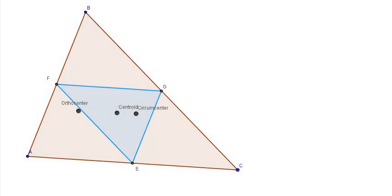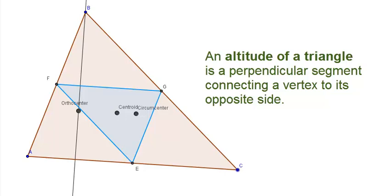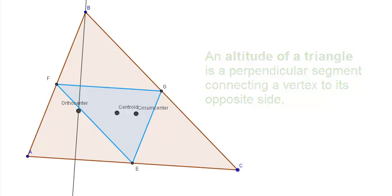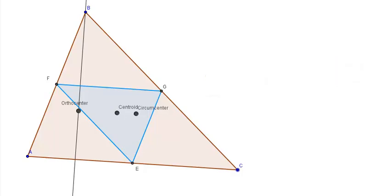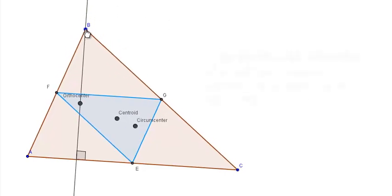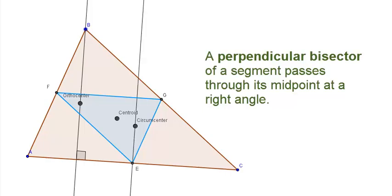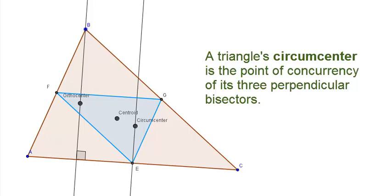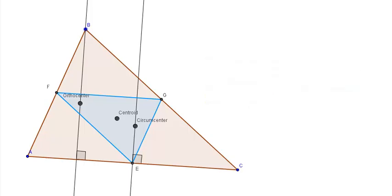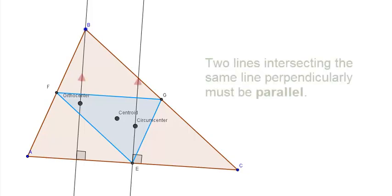Now we're going to construct a line containing one of the altitudes of the larger triangle. Note that it goes through the orthocenter — as it should, because all altitudes go through the orthocenter. The altitude intersects the side of the triangle at a right angle, and we'll mark that because it's going to be important later. Next, we're going to construct the perpendicular bisector through point E. Note that it goes through the circumcenter, because all perpendicular bisectors go through the circumcenter. Since it is a perpendicular bisector, it also intersects this side at a right angle. Since both lines intersect this segment at a right angle, they must be parallel — and that's going to be key later.